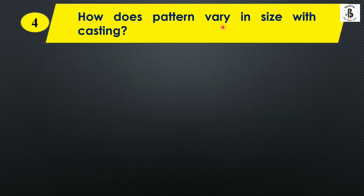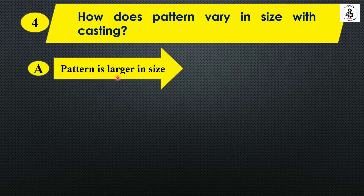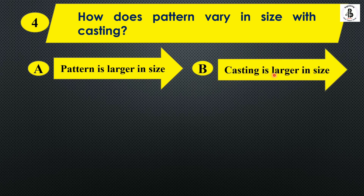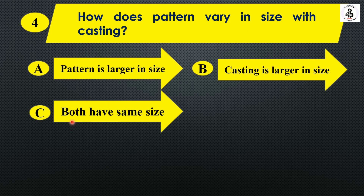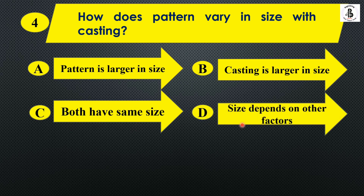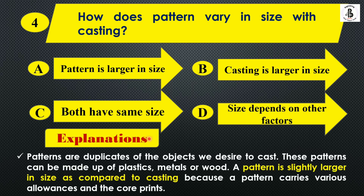Question four: How does a pattern vary in size with castings? Option A: Pattern is larger in size, Option B: Casting is larger in size, Option C: Both have the same size, Option D: Size depends on other factors. A pattern is generally a replica of the desired shape, but from a design standpoint, it is slightly larger in size compared to the casting because allowances are provided on the pattern. The right answer is Option A.